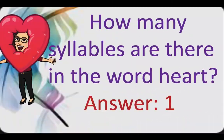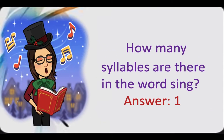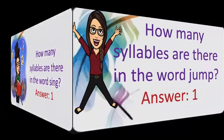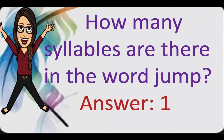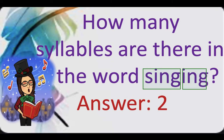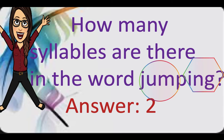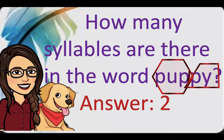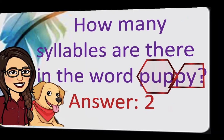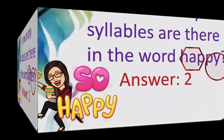Heart. Key. Sing. Jump. Singing. Jumping. Puppy. Kitten. Happy. — Practice clapping along to identify the syllables in each of these words.